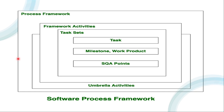We have a process framework which has some phases — whether it is specification, design and implementation, validation, and evolution. Then we have some umbrella activities and some framework activities, which we will see in the next slides. Then we have some task sets — you can divide your project into different tasks. Then we have certain persons assigned, certain milestones or work products, and certain software quality assurance points.